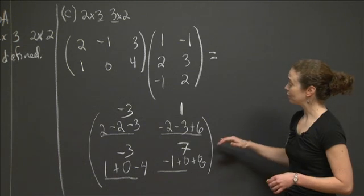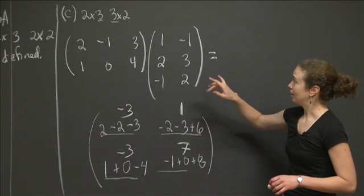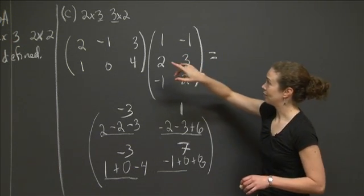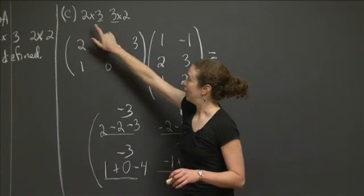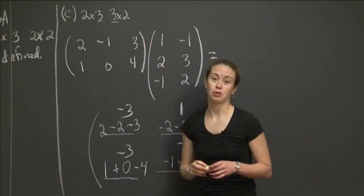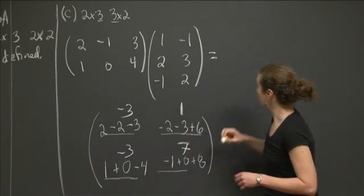And again, the reason we could multiply those was that the dimensions, when he wrote them down in order, the dimensions to the inside agreed. And then the outside gives us the size of the resulting matrix. So there was one more problem.